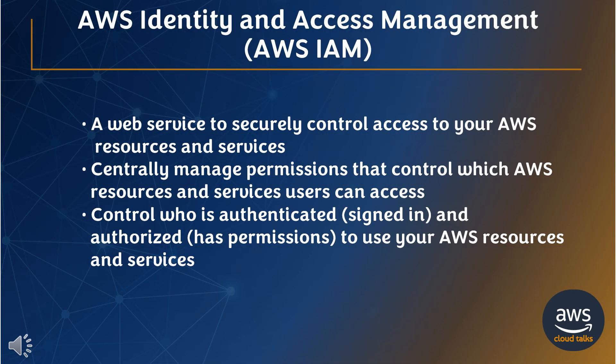AWS Identity and Access Management, AWS IAM, is a web service to securely control access to your AWS resources and services. It enables you to centrally manage permissions that control which AWS resources and services users can access. AWS IAM provides the infrastructure necessary to control authentication and authorization for your AWS account.